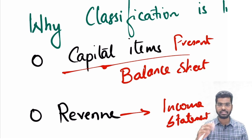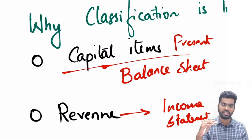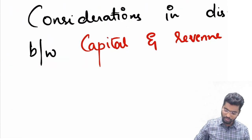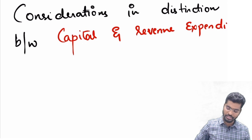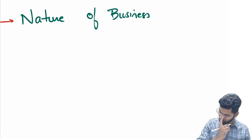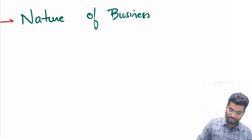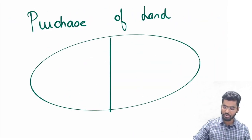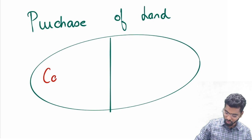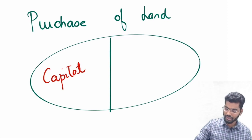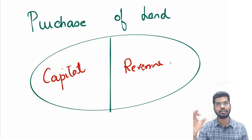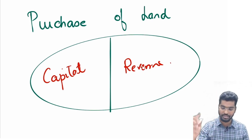So how do you differentiate something into a capital item or a revenue item? Let's look into various considerations we shall follow to identify something as capital or revenue. The first thing is the nature of business. Let's go through an example: let's say I purchase a land. Generally we say land is going to be used for the long term, so it's a capital item — but somebody might say it's revenue. So is purchase of land a capital item or a revenue item?